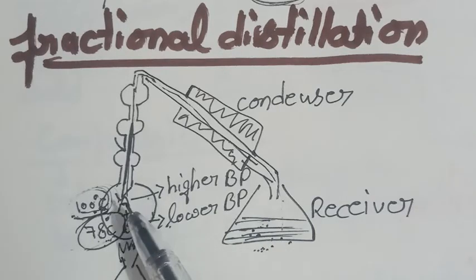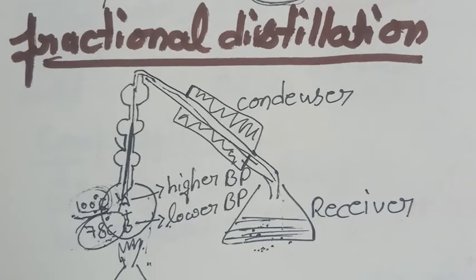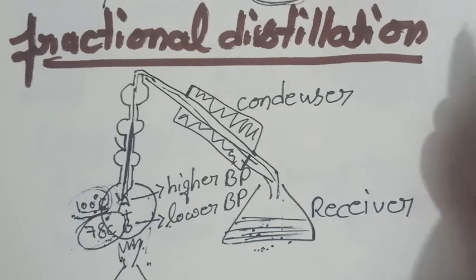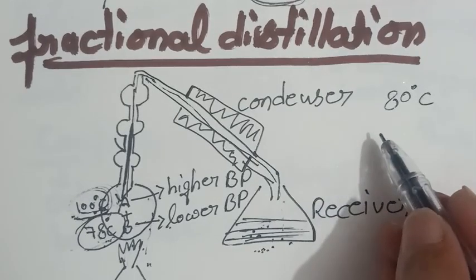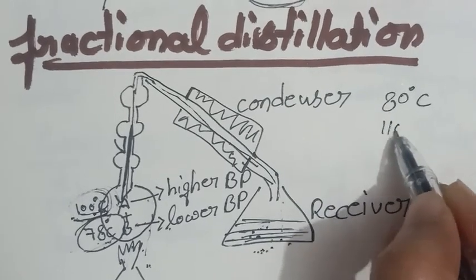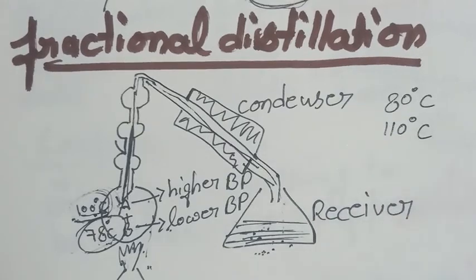One example I have given you here, like water plus alcohol. Now, second one is, second example of this is benzene and toluene mixture. We can also separate them. Whereas, the boiling point of benzene is 80 degrees Celsius. Whereas, the boiling point of toluene is 110 degrees Celsius.